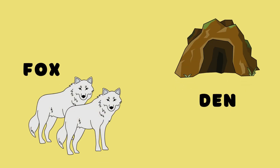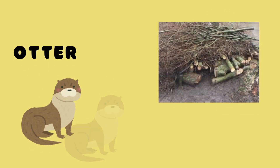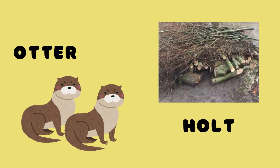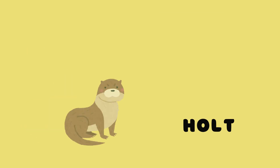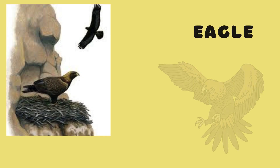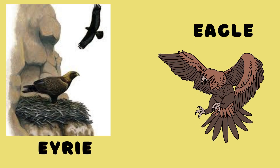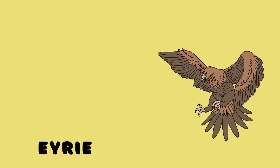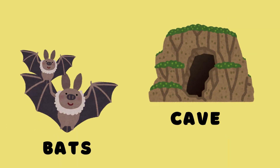Fox lives in a den. Otter lives in a holt. Kangaroos live in bushes. Eagles live in an eyrie. Bats live in caves.